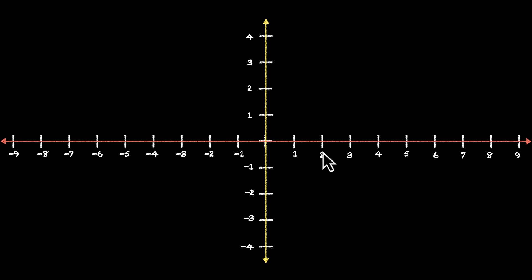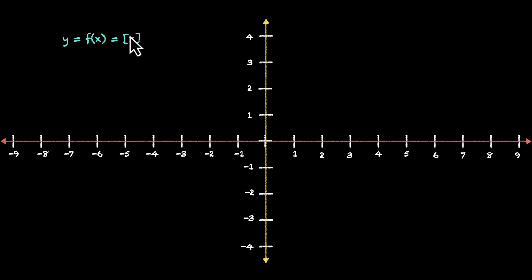In this video, we'll try finding the continuity of the greatest integer function. It's a beautiful function, so let's plot it first. The greatest integer function is y = f(x) = [x], where x is written in square brackets.